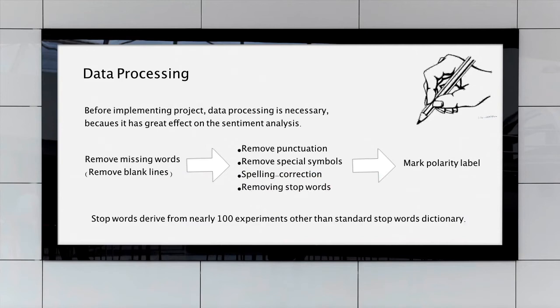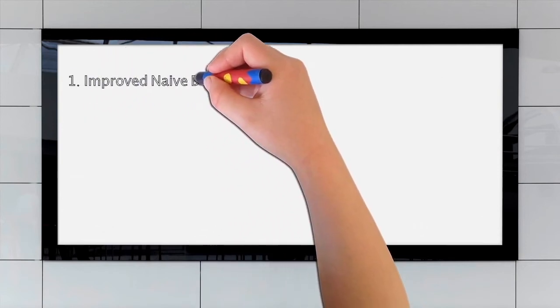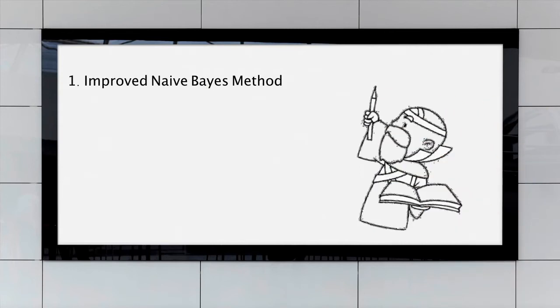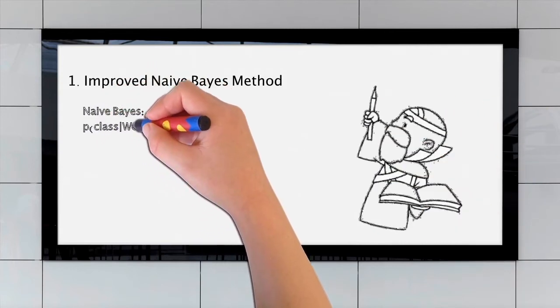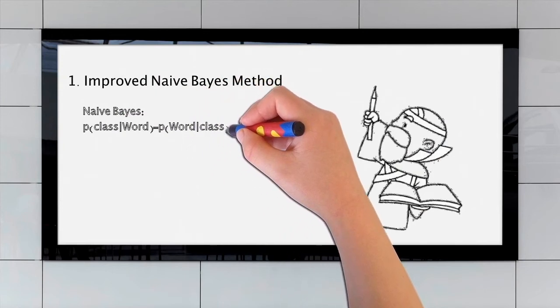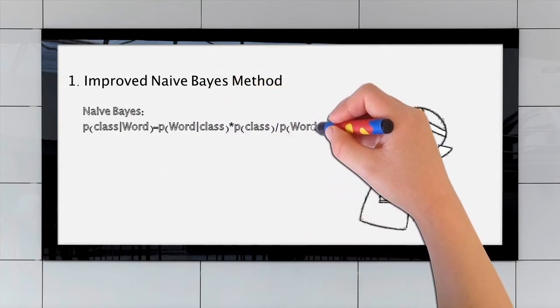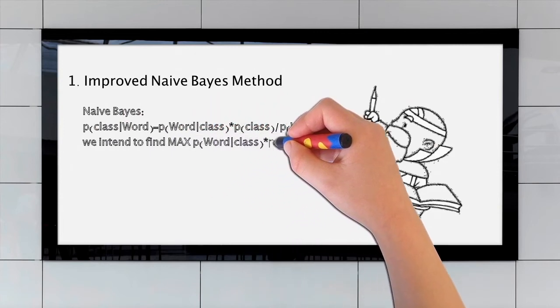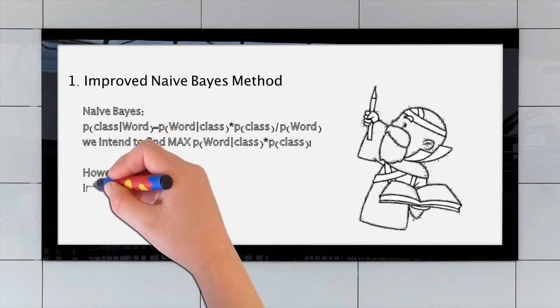Now, we will talk about Improved Naive Bayes. Firstly, let's have a review of the original Naive Bayes method. It's a simple classifier based on Bayes' theorem with strong independence assumptions between the features. The definition is illustrated as the following formula about probability. We intend to find max probability of words based on class.